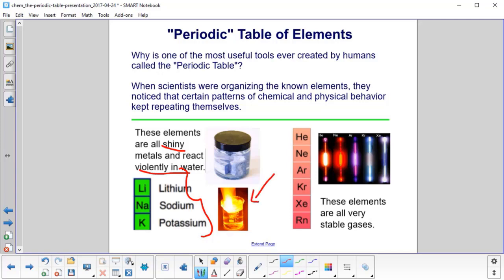These elements, helium, neon, argon, krypton, xenon, and radon are all very stable gases. And here, these are little vacuum tubes where you have a little bit of the gas in there and they pass an electric charge through it, an electric field, and they light up.